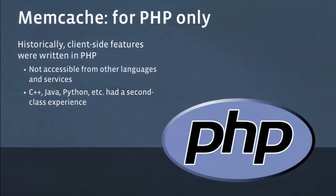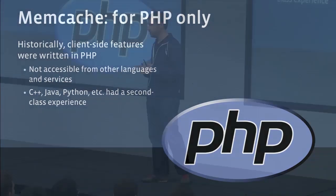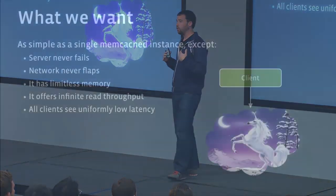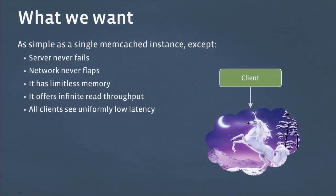Traditionally at Facebook, Memcache has been for PHP only. Anybody that had a client library could use Memcached, but when we built out this distributed system with a bunch of nice features, it was primarily just written for PHP. It was not accessible for many other languages. If you were using C++, Java, or Python, you were a second-class citizen — you didn't have access to all the features that had been built. The key insight is that everybody who wants to cache things already knows how to speak the Memcache protocol. It's very widely used.